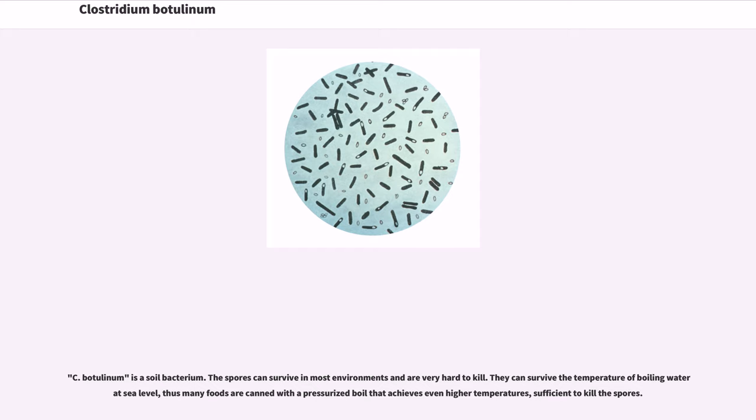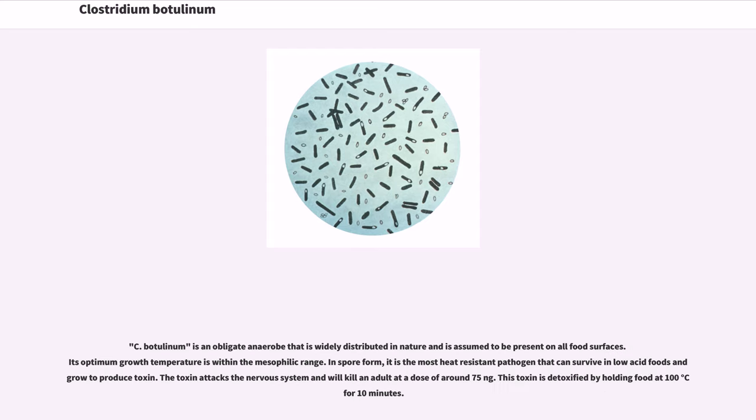C. botulinum is a soil bacterium. The spores can survive in most environments and are very hard to kill. They can survive the temperature of boiling water at sea level, thus many foods are canned with a pressurized boil that achieves even higher temperatures, sufficient to kill the spores. C. botulinum is an obligate anaerobe that is widely distributed in nature and is assumed to be present on all food surfaces. Its optimum growth temperature is within the mesophilic range. In spore form, it is the most heat-resistant pathogen that can survive in low-acid foods and grow to produce toxin. The toxin attacks the nervous system and will kill an adult at a dose of around 75 nanograms. This toxin is detoxified by holding food at 100 degrees for 10 minutes.